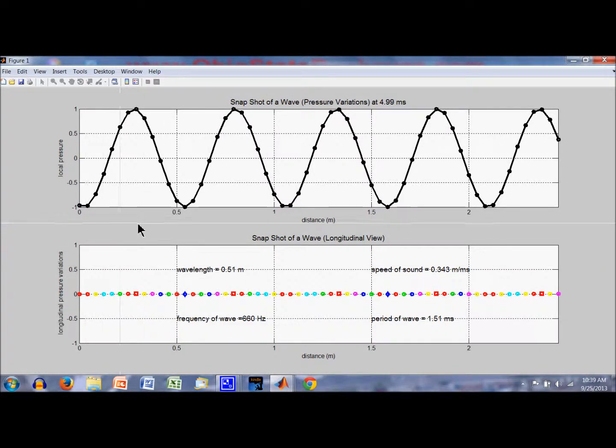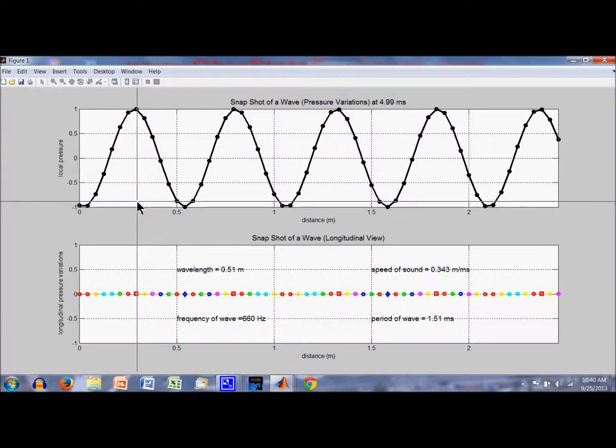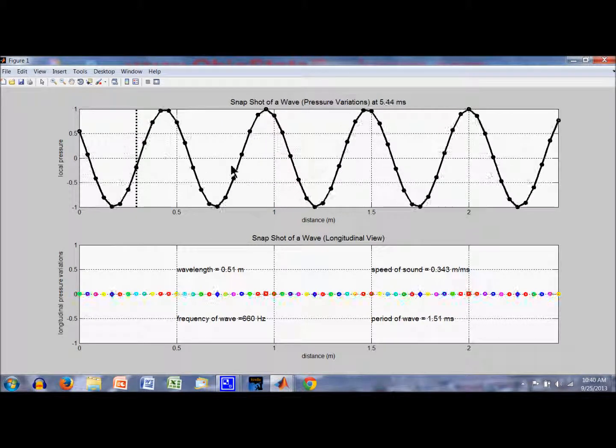Start over here and move across. Here is 0.51 meters. So this is a higher frequency wave. We will start again by denoting the location of this compression point and watching it move across.